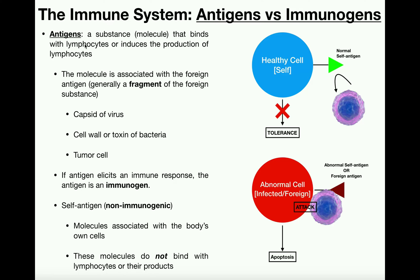What is an antigen? An antigen is a substance or molecule that binds with lymphocytes and induces the production of more lymphocytes — basically a substance that induces an immune response. I want to qualify that by saying antigens can potentially induce an immune response; they don't always. Many antigens do induce an immune response, but there are some that not only shouldn't, but won't induce an immune response.